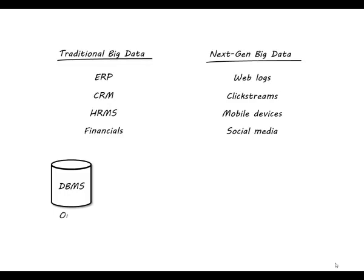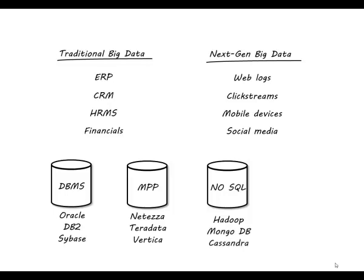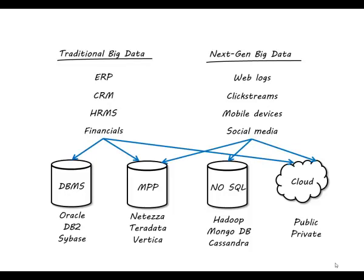We put it in places like a database such as Oracle, DB2, or Sybase, or we'll put it into an appliance like a massive parallel processing repository such as Netezza, Teradata, or Vertica. And also there are NoSQL data sources out there such as Hadoop — which is very popular and sometimes synonymous with big data — MongoDB, and Cassandra. And of course the cloud is very popular, either a public cloud or a private cloud. These are the main places that information gathers up throughout the years that we call big data, including the more modern ones like click streams and social media.